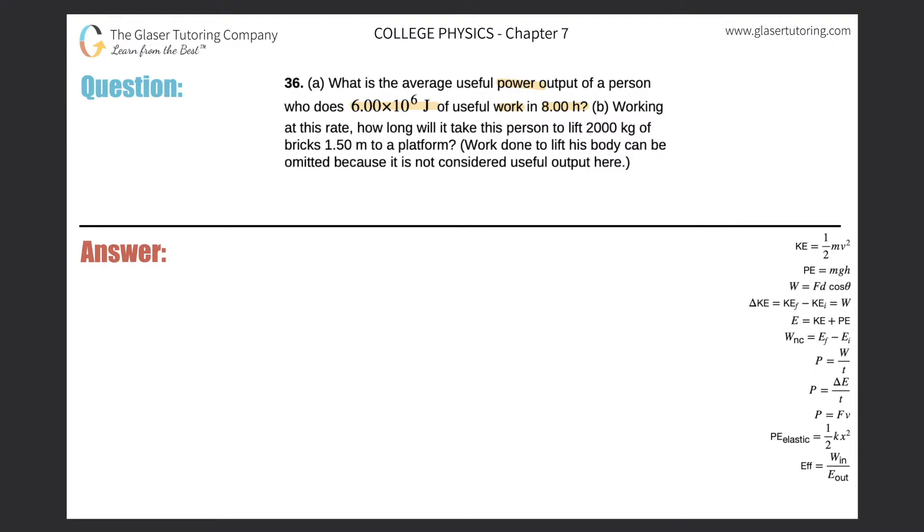So basically, I need to calculate power, and I know work and I know time. So do we know a formula that relates these three variables? And we do right over here on the side. So let's write it down. We know that the power will be equal to the work done divided by the time in which it's performed.